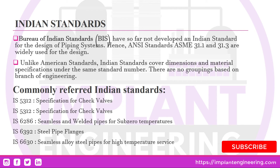Another type of standard are the Indian standards, or Bureau of Indian Standards. BIS has so far not developed an Indian standard for the designing of piping systems. Hence, ANSI or ASME standards are used for design. Unlike American or British standards, Indian standards cover dimensions and material specifications under the same standard number, with no particular groupings based on branch of engineering.